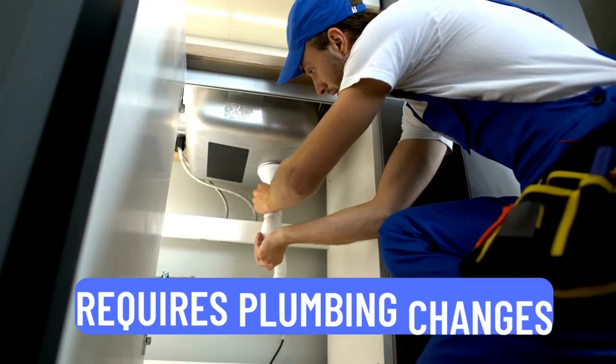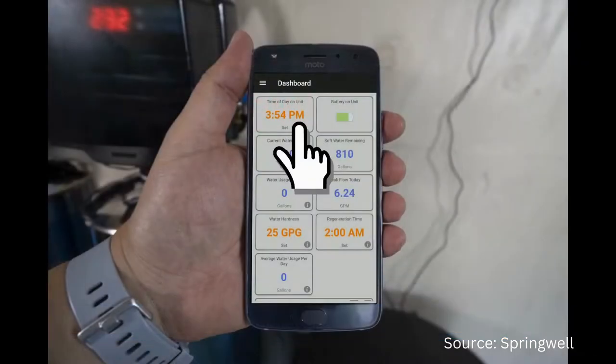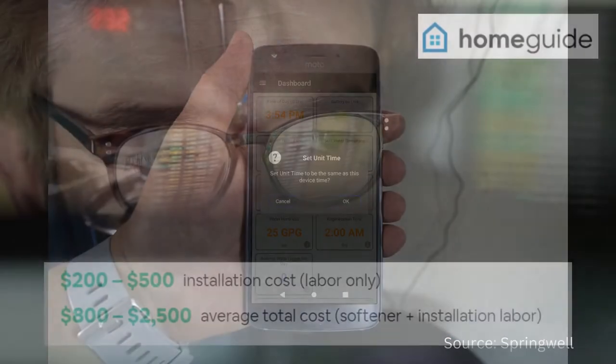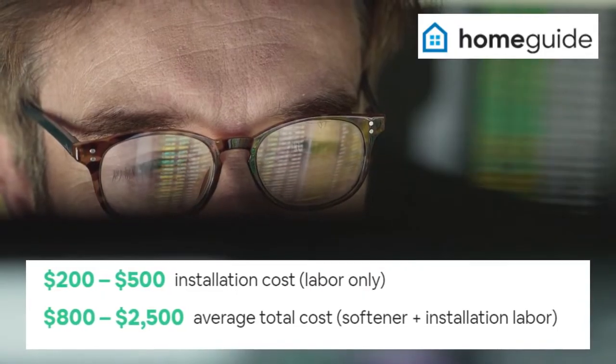But they're tricky to install. Requires plumbing changes so tenants can't use them. Also, you need to set their regeneration timings and incur additional costs of maintenance. Did I mention that water softeners don't come below $150?